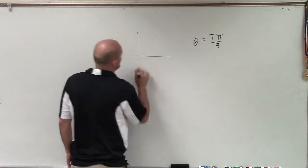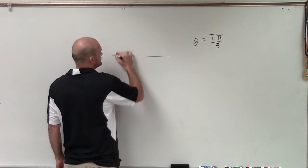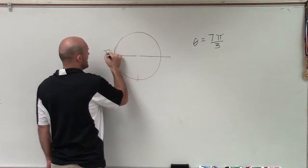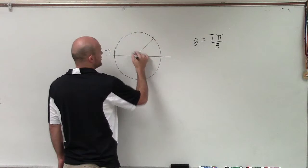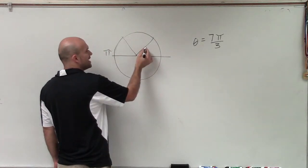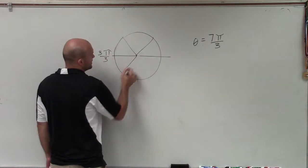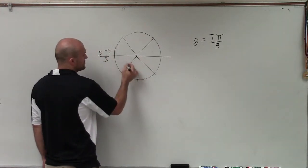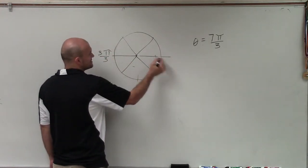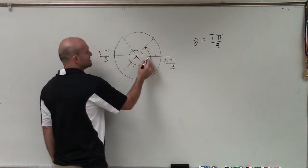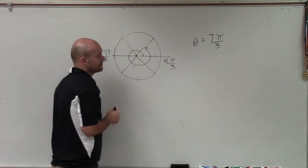If I was going to break my unit circle into thirds, remember, halfway around is π. So if I broke this down into thirds, that would be 1π/3, 2π/3, and then 3π/3. Continuing down on the lower half, this would be 4π/3, 5π/3, 6π/3. So my angle is going to look like this - as this would be 6π/3, so that's 7π/3.